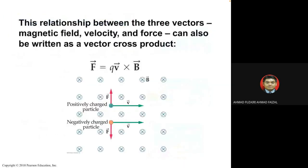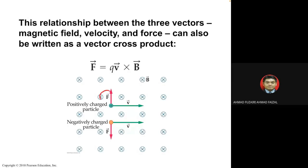The relationship between the three vectors — magnetic field, velocity, and force — differs for positive and negative charges. Although they share the same magnetic field, in the same velocity direction the forces differ. A positively charged particle moves toward the top while a negatively charged particle moves toward the bottom — the directions of force are opposite.